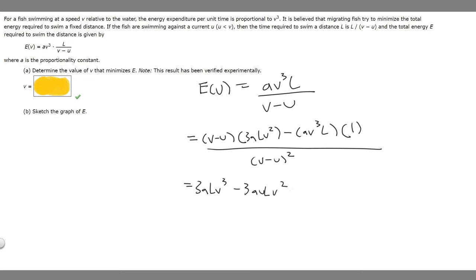If we multiply this out what we're going to get is 3aLv³ minus 3auLv² minus aLv³, and then it's going to be over (v - u)². But we're not going to need this because we're just setting it equal to zero, so we just need to know when the top equals zero.